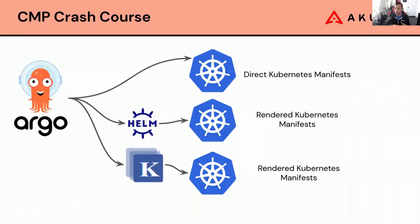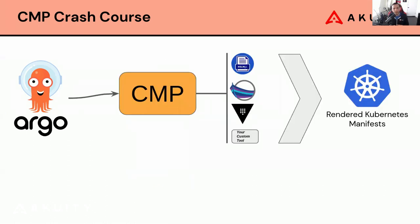Argo CD has native support for configuration management tools. These tools are Helm and Kustomize out of the box. But what if you want to use a different configuration management tool, or you want to do some sort of post-rendering after you've downloaded your YAMLs? Well, that's something that you're going to need to use the config management plugin tool for, or the CMP. The CMP at a basic level allows you to use your own custom config management tool or add and extend support for existing tools to Argo CD. For example, if you want to use something like Helmfile or Carvel's YTT, or if you want to use your own custom tool to do some post-rendering, then a CMP is something you're going to want to use.